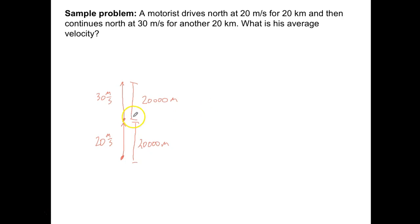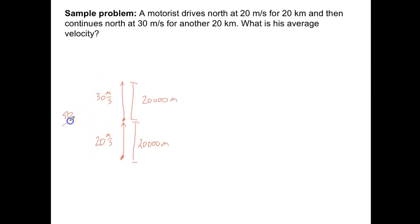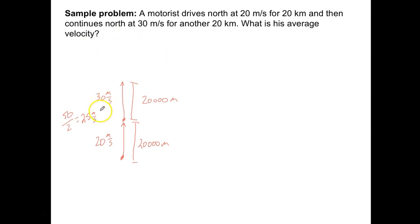A lot of people will just add the two speeds and divide by two. So they'd do 30 plus 20, which is 50, divide by two, and think the answer is 25 meters per second — because the problem does ask for average velocity.